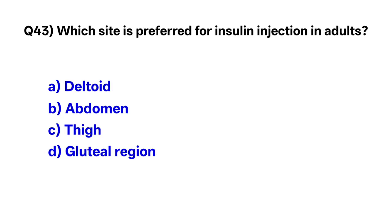Question number forty-three: Which site is preferred for insulin injection in adults? The correct option is B, abdomen.